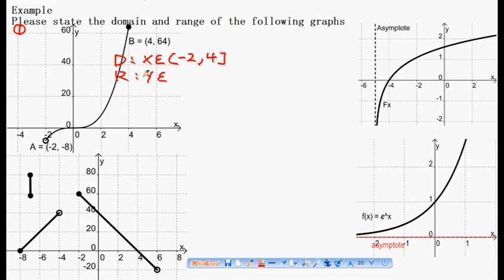The range is Y belongs to, so we look at the vertical value. Vertical Y value for the range is from minus 8 to 64. So minus 8 is not included, so it's minus 8 and 64 square bracket.